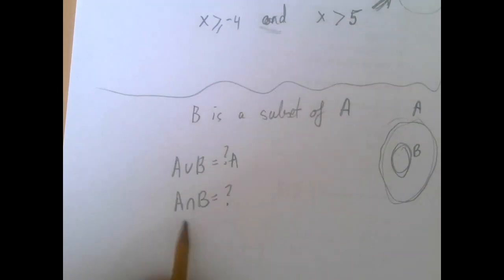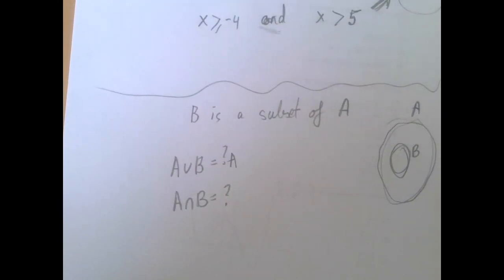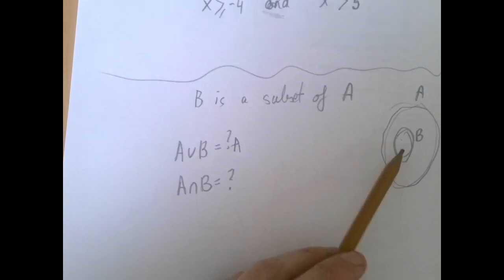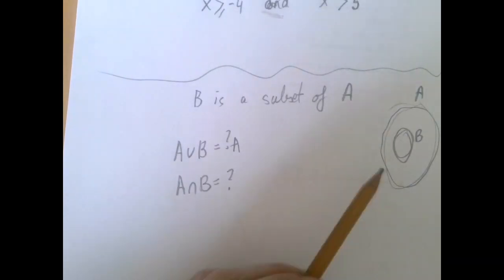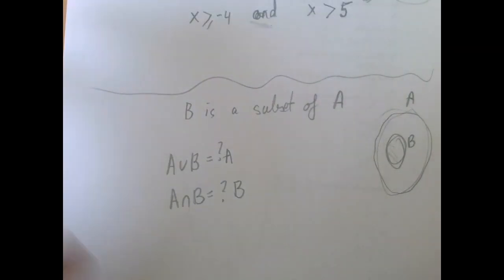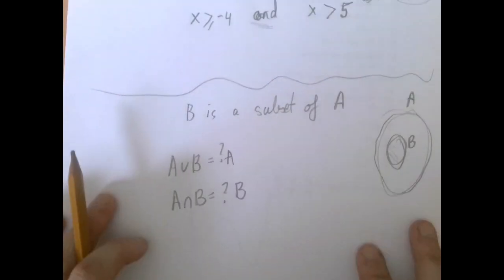What about the intersection? In case of the intersection, now we want to list elements that are in both. And that means they are also in B. And if they are in B, then automatically in A. So now the intersection is the other set. If you have two sets and one of them is a subset of the other, then when you take the union of the two, that's the bigger set. And when you take the intersection of the two, that's the smaller set. And that's exactly what happened.